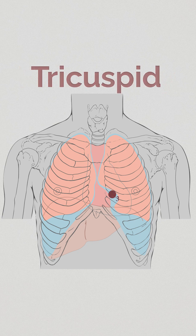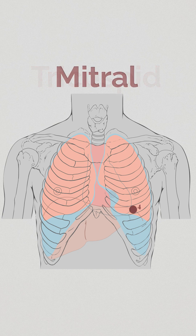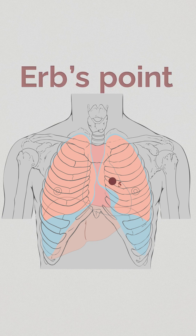The tricuspid area is found in the lower left parasternal region. The mitral area is positioned in the fifth intercostal space along the midclavicular line. Erb's point is situated in the left parasternal region at the third intercostal space.